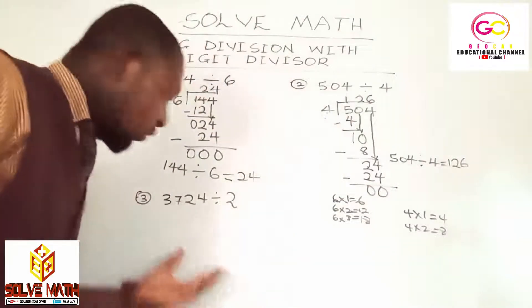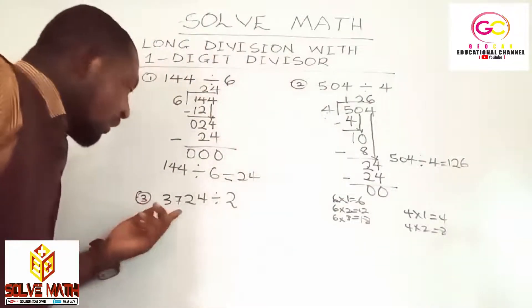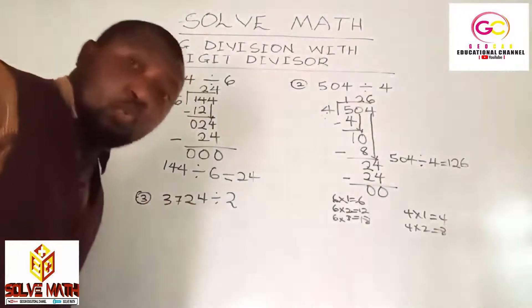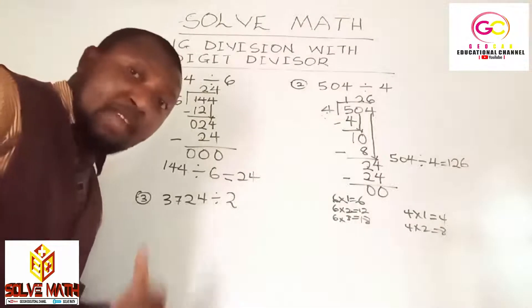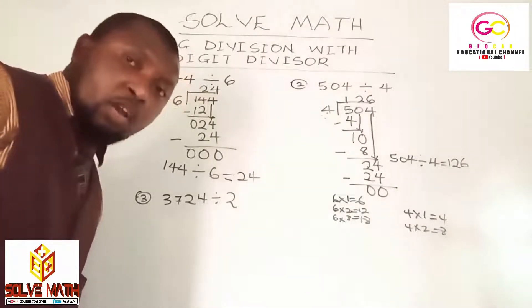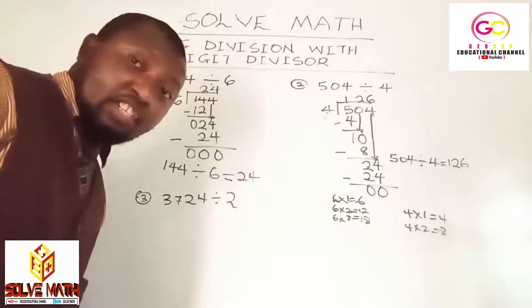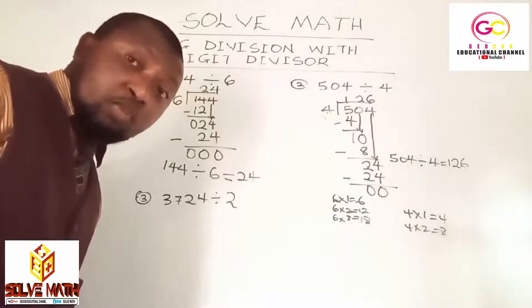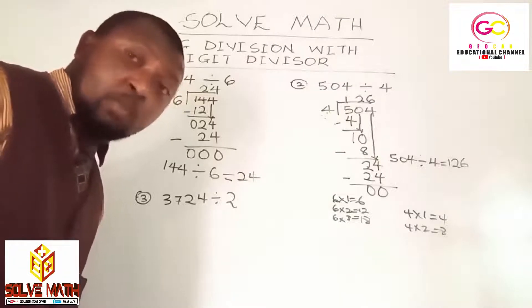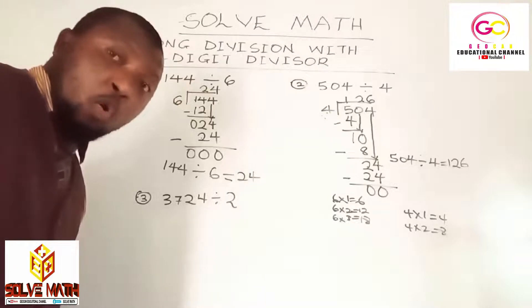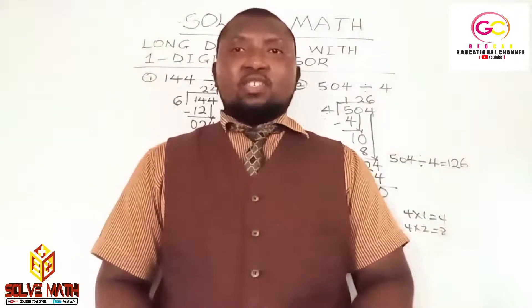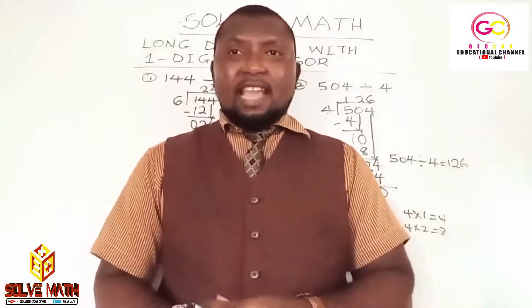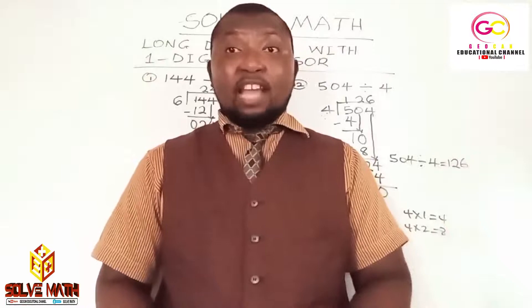I will urge you to try your hands on this: 3724 divided by 2. Take the digits one by one. Solve it and send me the results on YouTube via Geocan Educational Channel, or on Facebook Geocan Educational Channel, Facebook SolveMath, or on KidZone. This brings us to the end of our lesson today. We meet again. Keep solving more math. Adios!